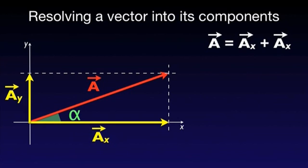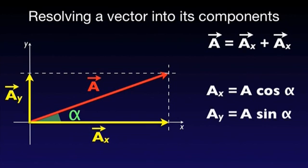If the angle between the vector and one of the axes is given, it is fairly straightforward to find out the magnitudes of the two components as a function of the magnitude of A and the angle alpha. AX is A times cosine alpha and AY is A times sine alpha.